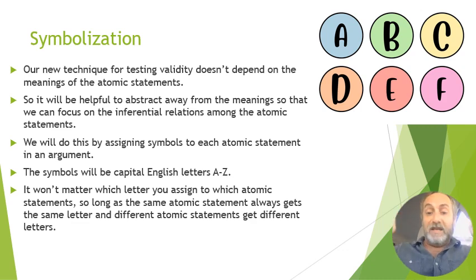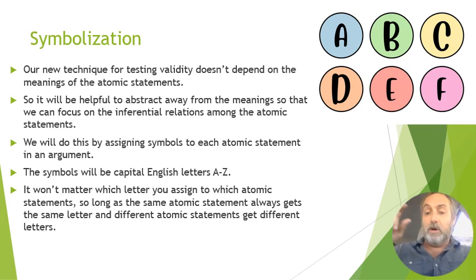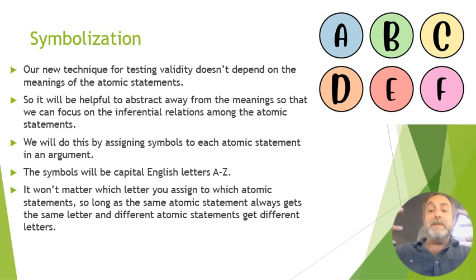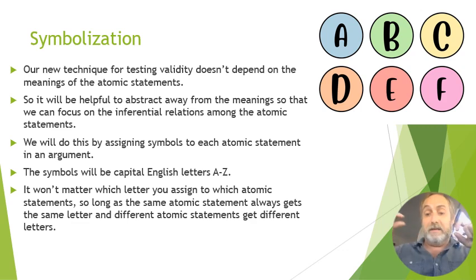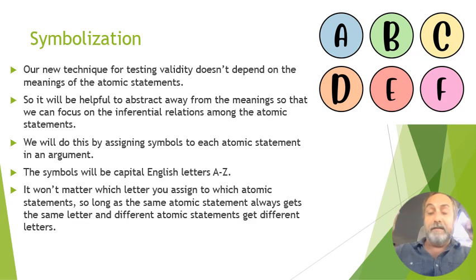The technique we'll build for testing argument validity doesn't depend on the meanings of the atomic statements — it really depends on the statement operators, the 'ands' and 'ors' and so on. So we abstract away from atomic statement meanings by replacing each atomic statement with a single capital English letter A through Z. Which letter you assign doesn't matter, as long as different atomic statements get different letters. For example, 'Iube is sick' could be S and 'Alice is at work' could be W.